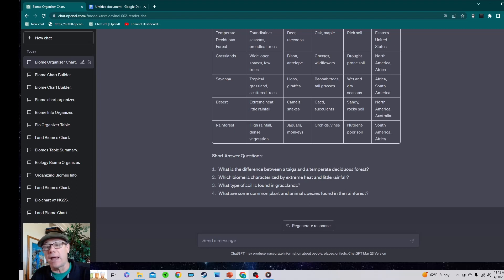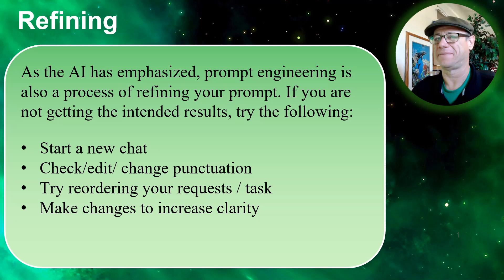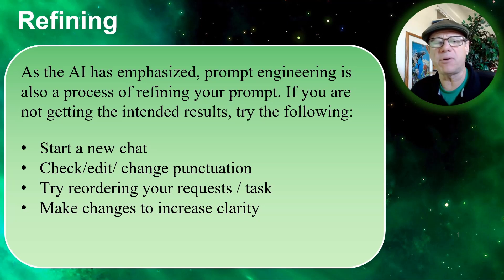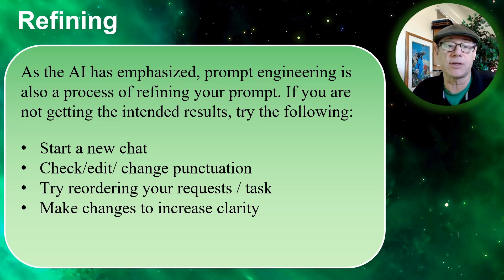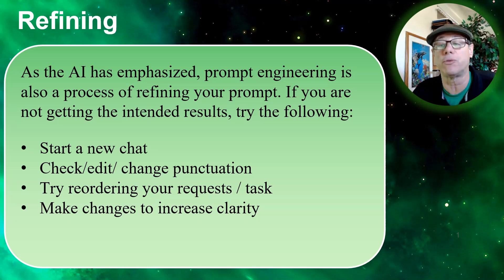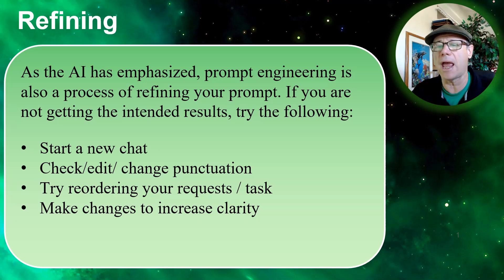Now let's look at some other refining techniques. Remember, as the AI emphasized in its definition of prompt engineering, it is also a process of refining your prompt. If you're not getting the intended results, try some of the following: start a new chat — ChatGPT is using your entire open chat to refine its results, so sometimes it's better to begin fresh. Check, edit, and change punctuation — most of the time ChatGPT is quite forgiving, but sometimes punctuation can have a dramatic impact. Commas are for separating lists, periods for closing a statement, semicolons for linking tasks. Try reordering things — sometimes putting one element in front of another improves results. And of course, make changes to increase clarity.